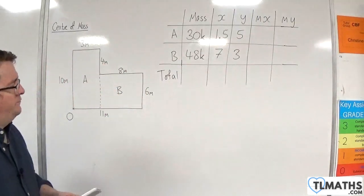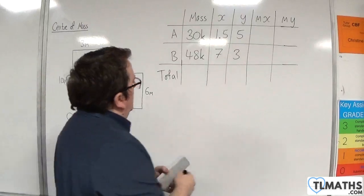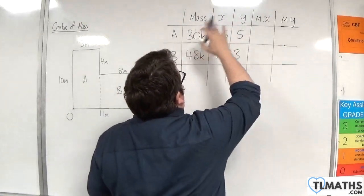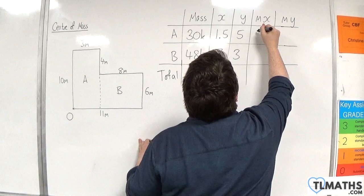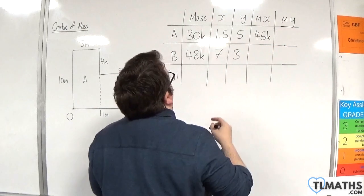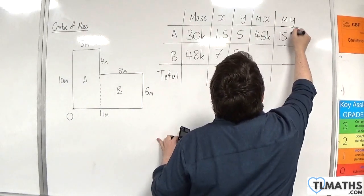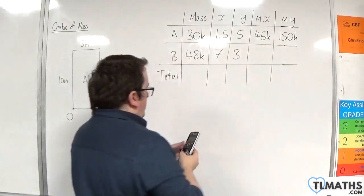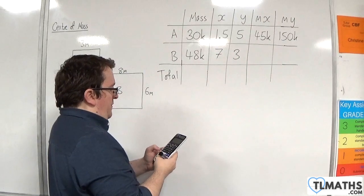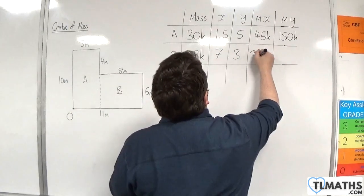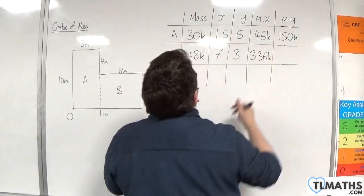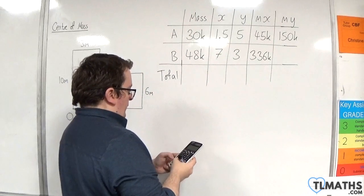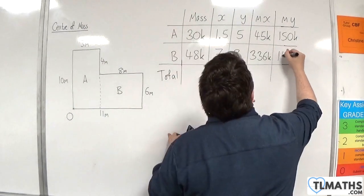What have we got then? M times X, so that's going to be 45K, and then 150K. So 30K times 5. We've got 48K times 7, so 336K. And then 3 lots of 48 is 144K.